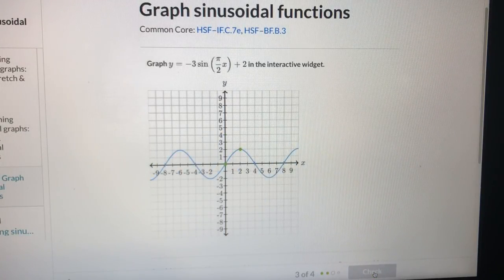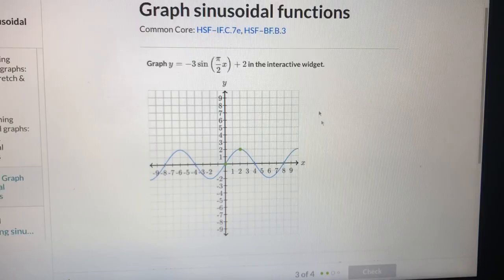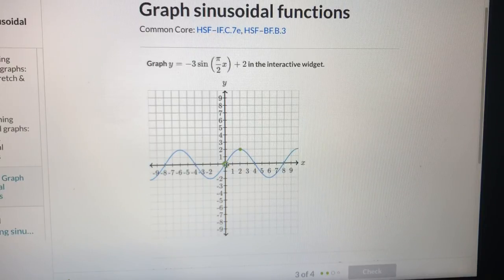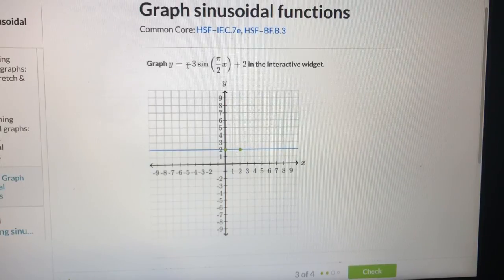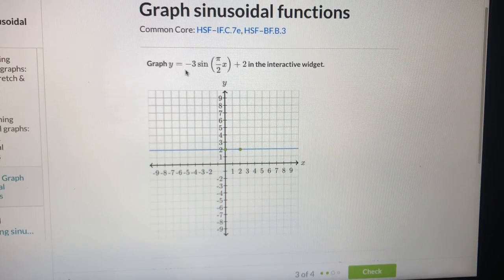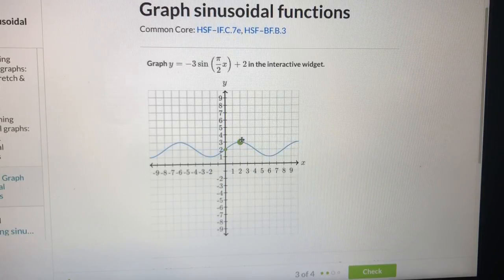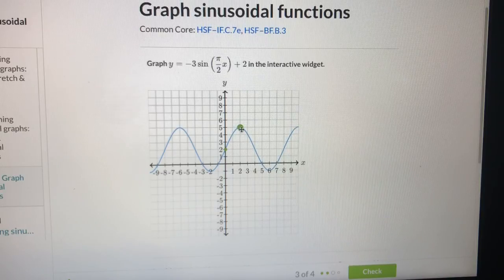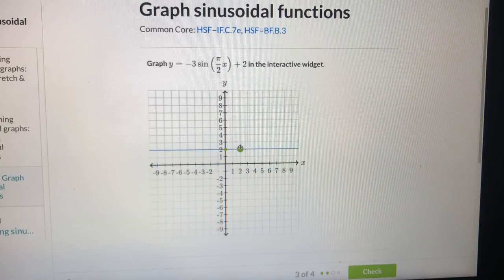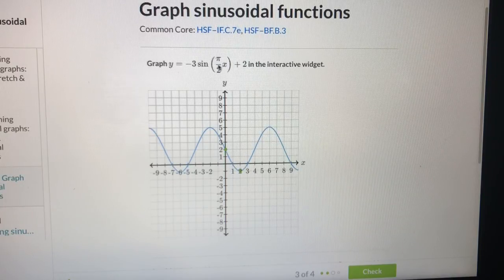So here, negative 3 sine, half pi x plus 2. So first, we get the midline at 2. And the coefficient here is negative 3. It means the amplitude is 3. And it's negative sign. It should go down. 3. 1, 2, 3. Okay.